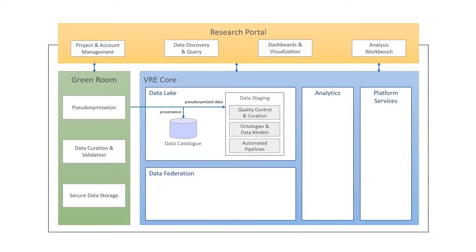Approved data sets are copied from the Green Room into the data lake, where provenance information is captured in the data catalog. This provides an important audit trail and the enforcement of data governance policies. The data lake also includes data staging